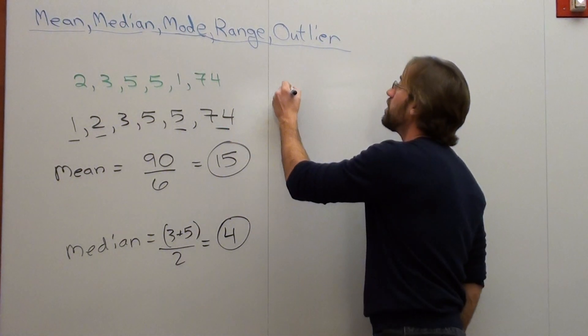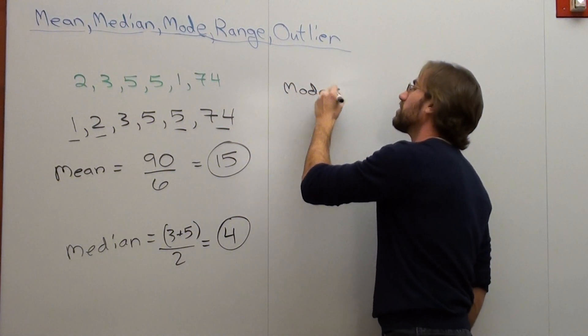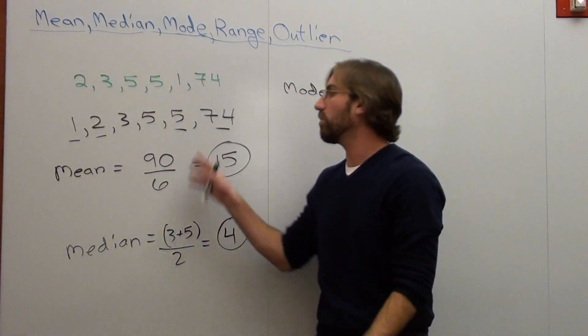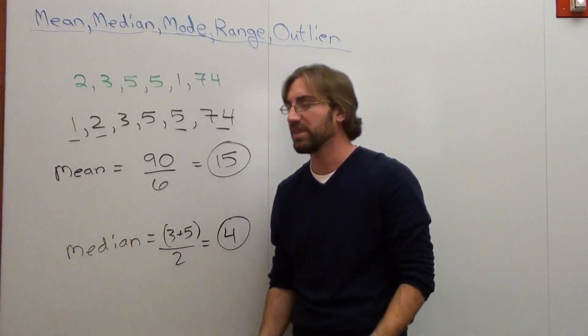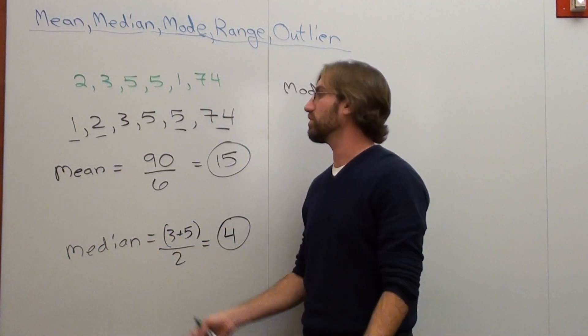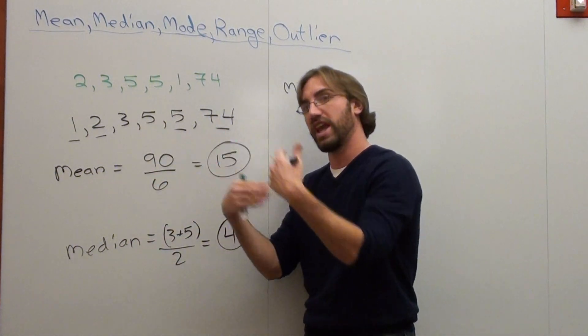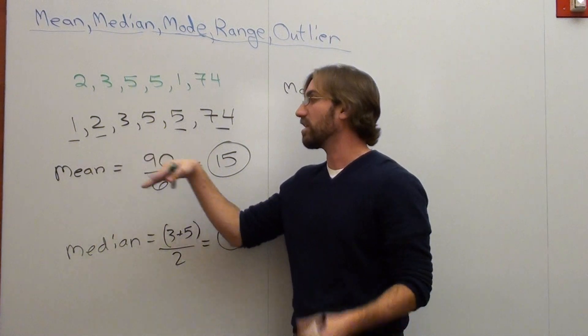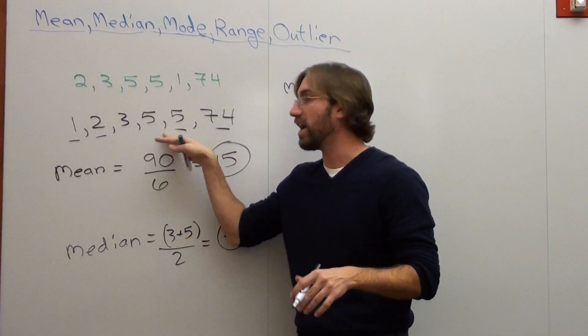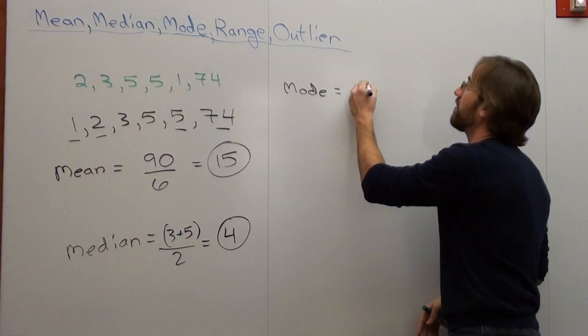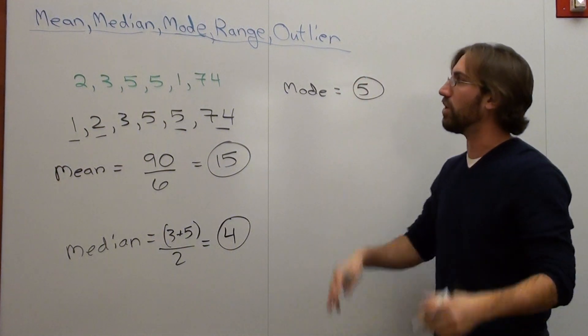Going to mode. Mode is the number that you see the most. And there's a question that usually comes from this. They say, well, what happens if you see every number one time? Then there is no mode. Well, what happens if you see two 3s and two 5s, and everything else has 1? Then the mode is 3 and 5. In this case, the number that you see the most clearly is 5. So your mode is 5. The number that you see the most is your mode.